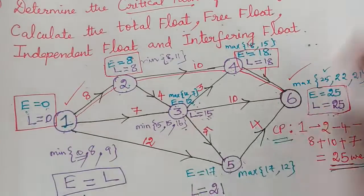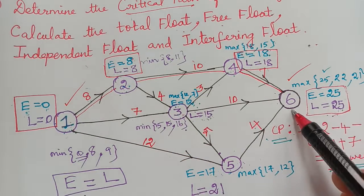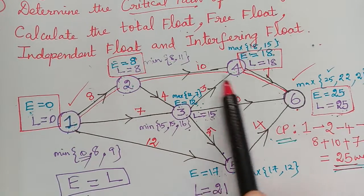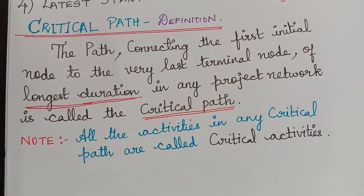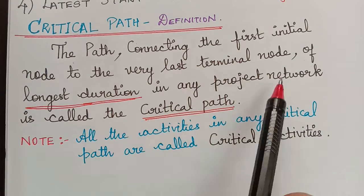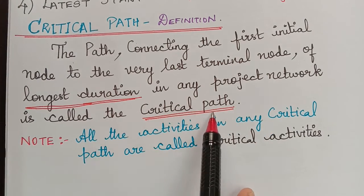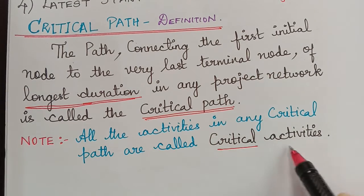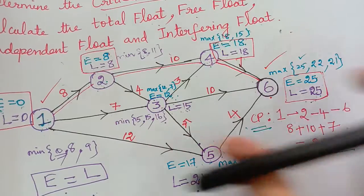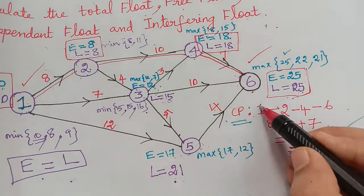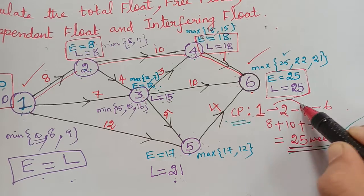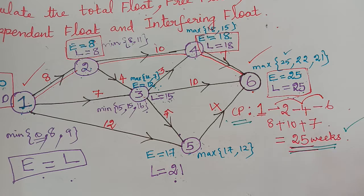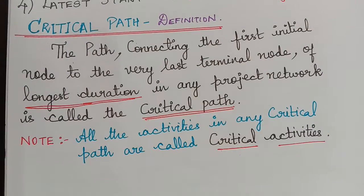The path connecting the first initial node to the terminal node with the longest duration in any project is called the critical path. All the activities lying on the critical path are called critical activities. For this network, the activities 1 to 2, 2 to 4, and 4 to 6 are all critical activities.